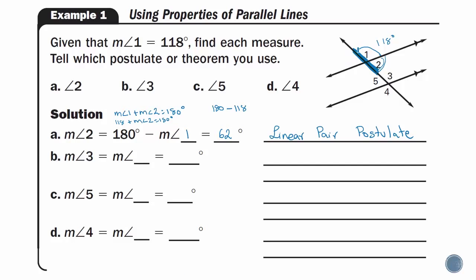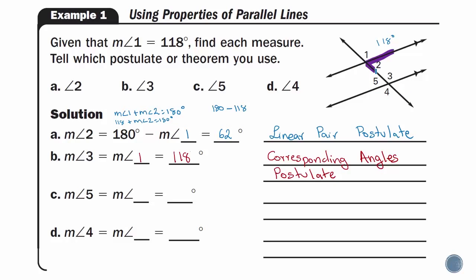For part C, to find the measure of angle 5: if I draw my backwards letter Z, I notice that angle 2 and angle 5 are inside my letter Z. Another way to say it is that angle 2 and angle 5 are inside the parallel lines on opposite sides of the transversal, so they are alternate interior angles, and alternate interior angles are congruent. Since angle 2 was 62 degrees, the measure of angle 5 is also 62 degrees, using the alternate interior angles theorem.